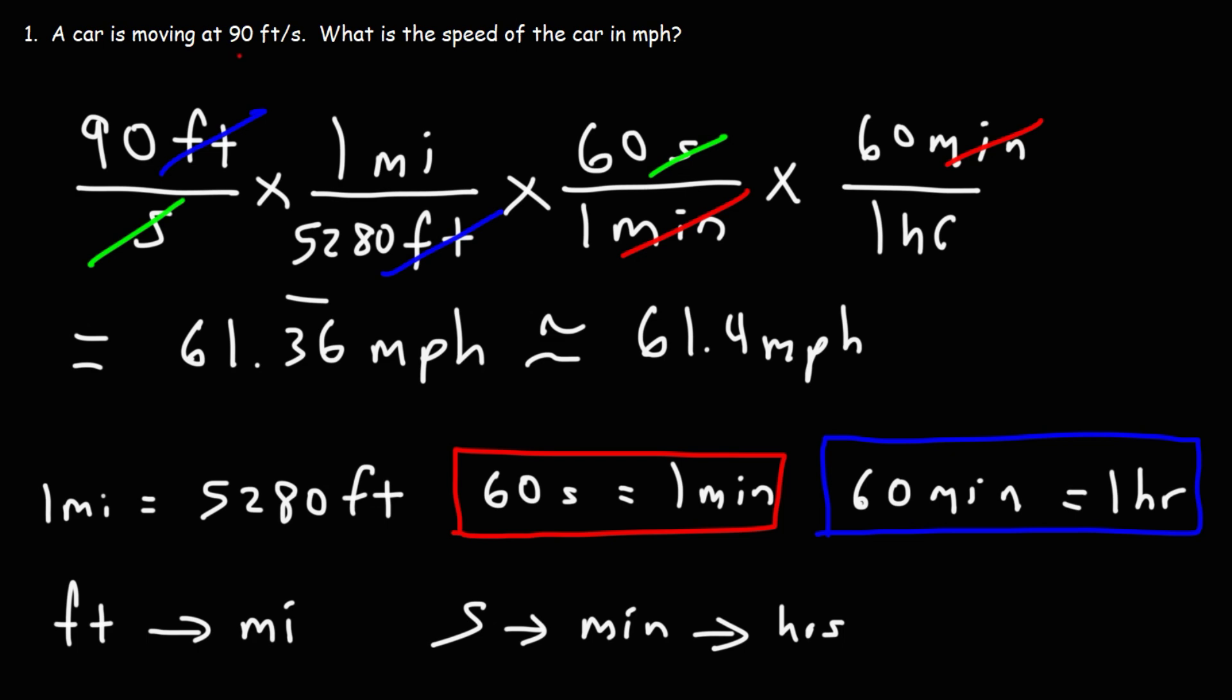If you want to pay attention to significant figures, we only have one. We could round this to 60 miles per hour if we want to round it to one significant figure.